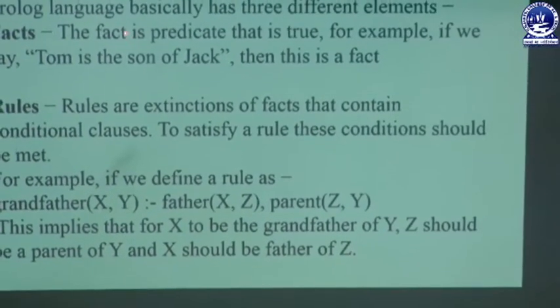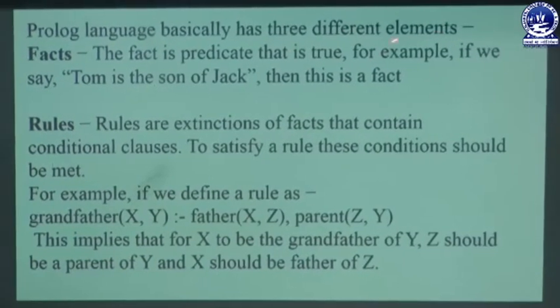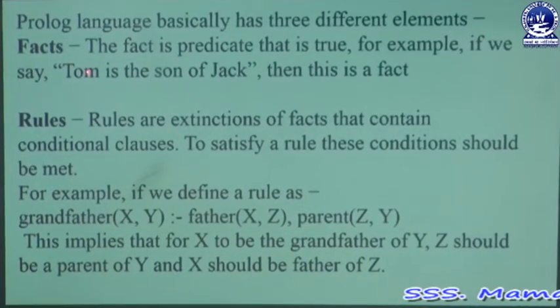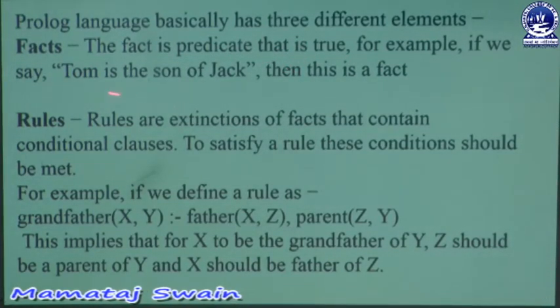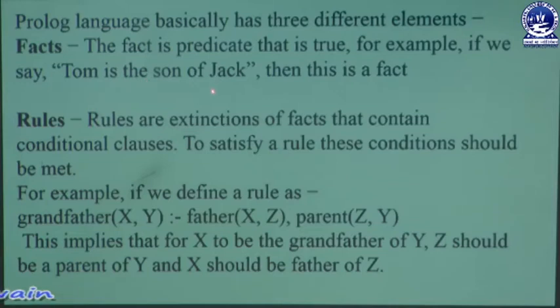Prolog language basically has three different elements. The first one is facts. A fact is a predicate that is true. For example, if we say Tom is the son of Jack, then this is a fact. A fact is a predicate which is always true — if you take a sentence that Tom is the father of Jack and this statement is true, then we can say that this is a fact.